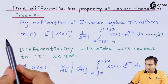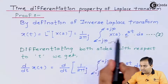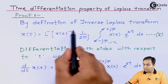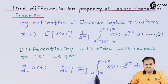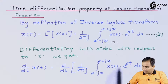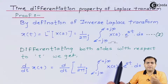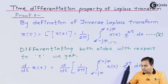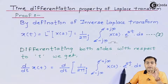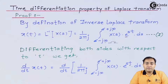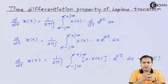Now I am going to differentiate both sides with respect to time. So d/dt of x(t) equals 1/(2πj) times the integral from σ − j∞ to σ + j∞ of X(s)·e^(st) ds. Out of this expression, the only term that contains the variable t is e^(st), so that is the term which gets differentiated.